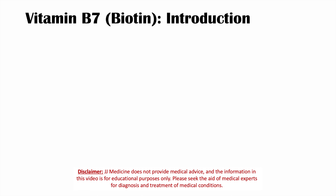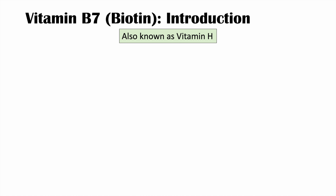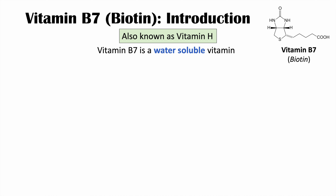Welcome back to another lesson. This lesson is on vitamin B7 or biotin deficiency. We're going to start by introducing what biotin or vitamin B7 is. It's also known as vitamin H, and vitamin B7 is a water-soluble vitamin. It is one of eight B vitamins, and this is what it looks like here.